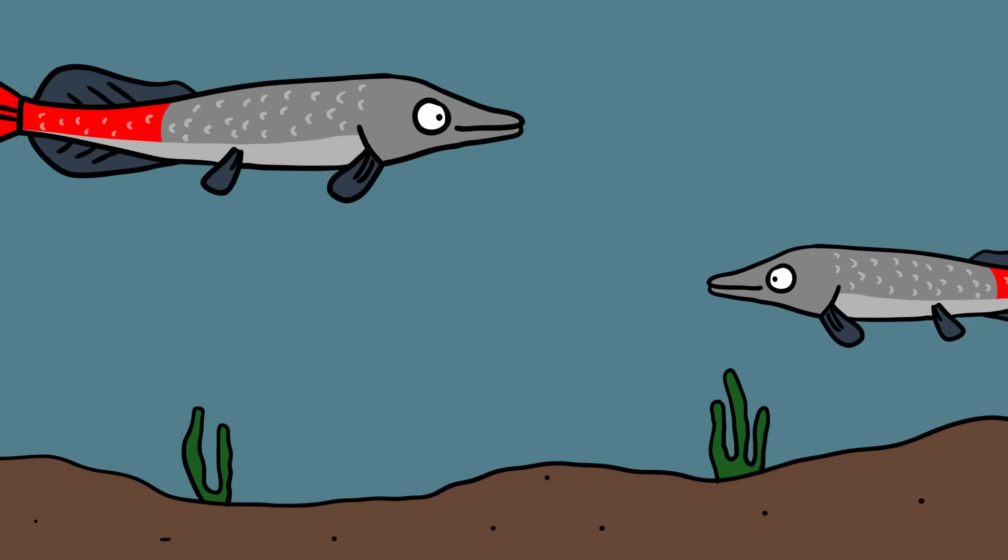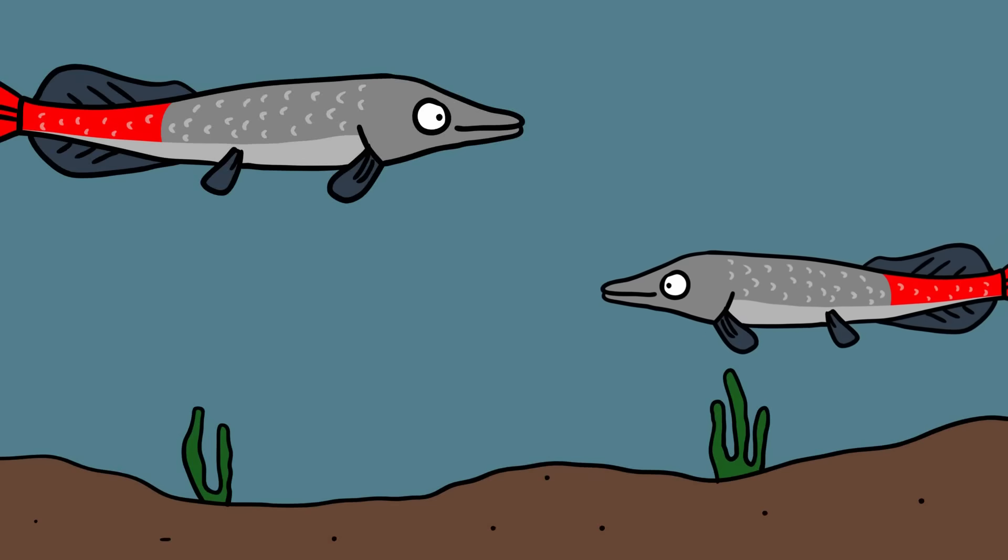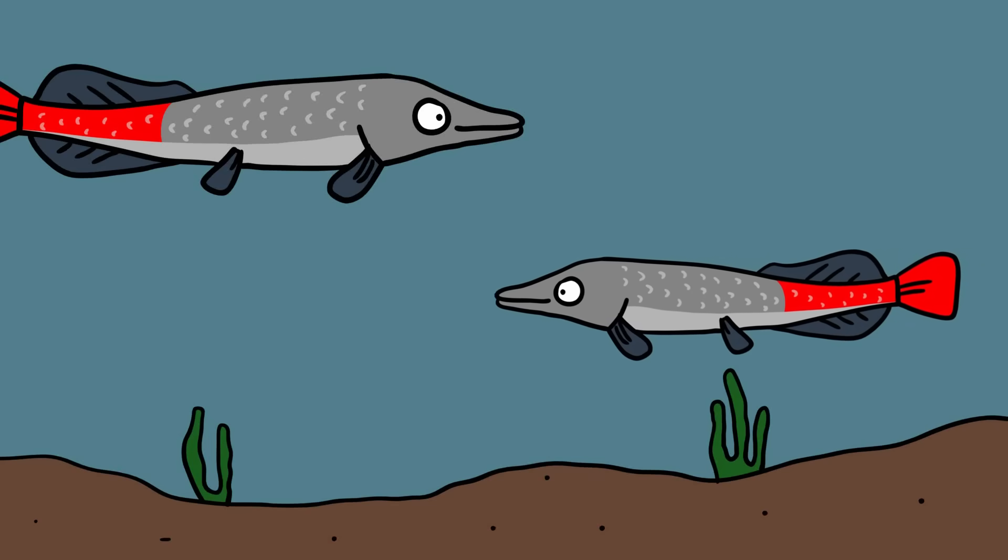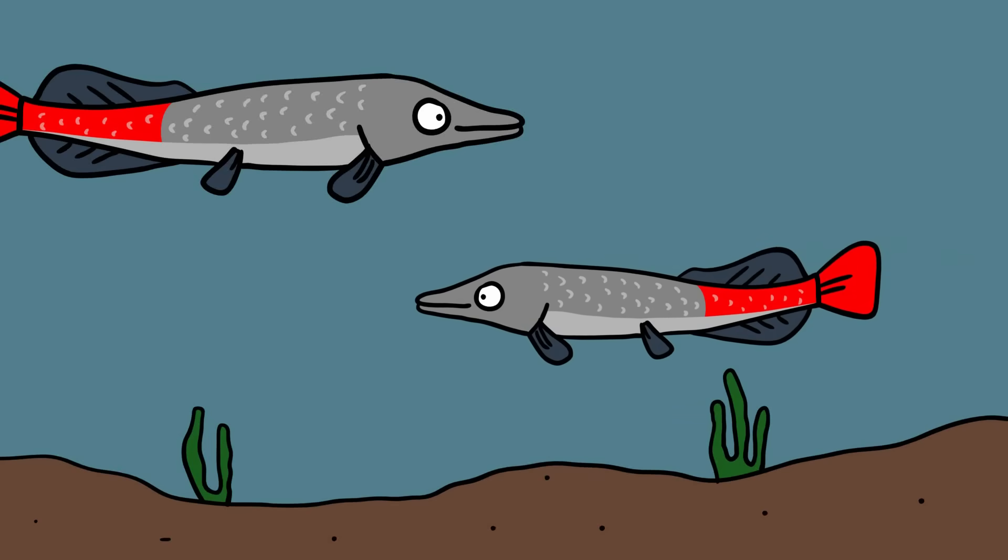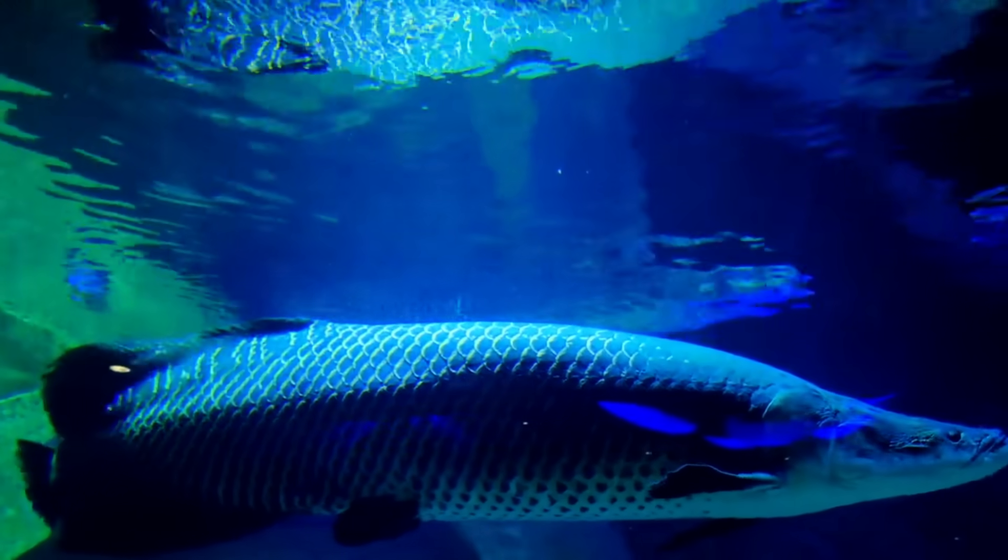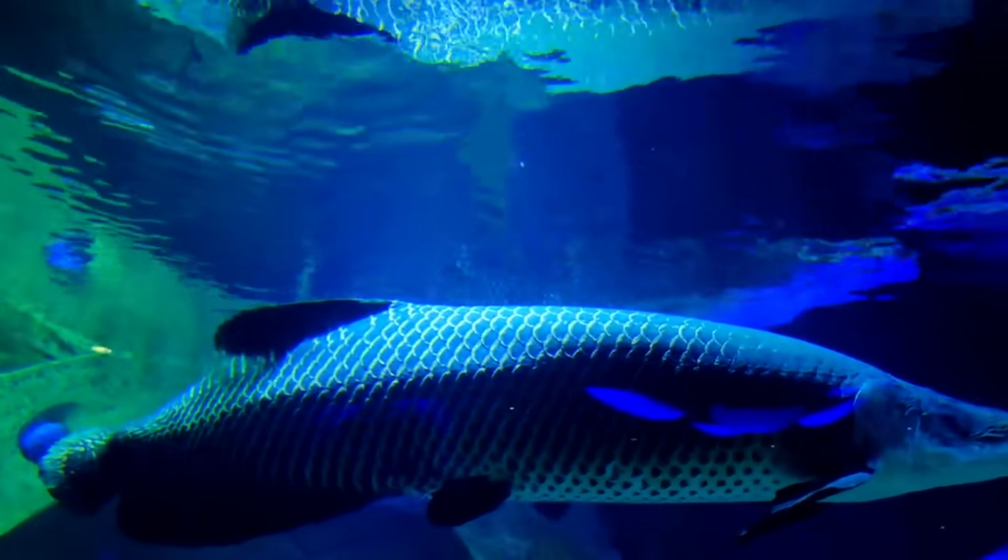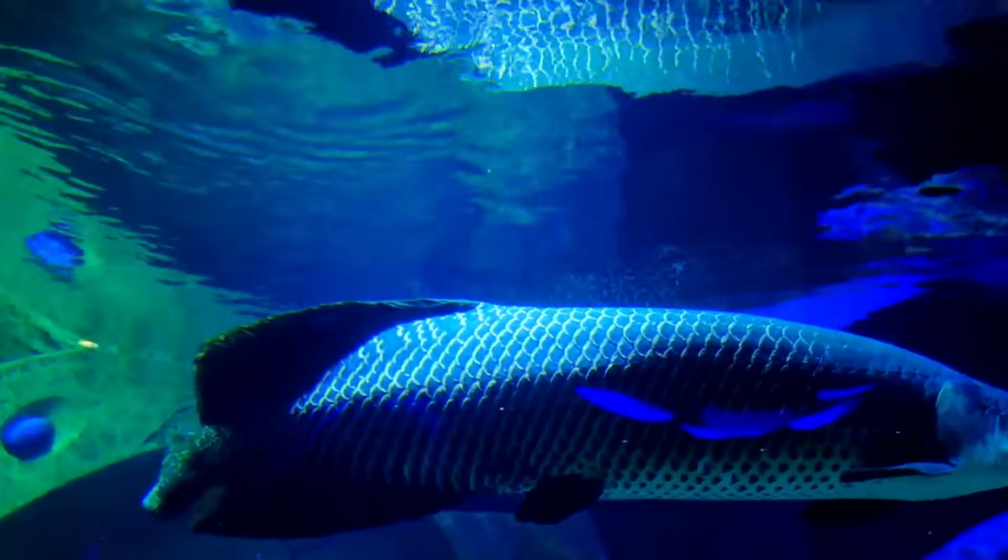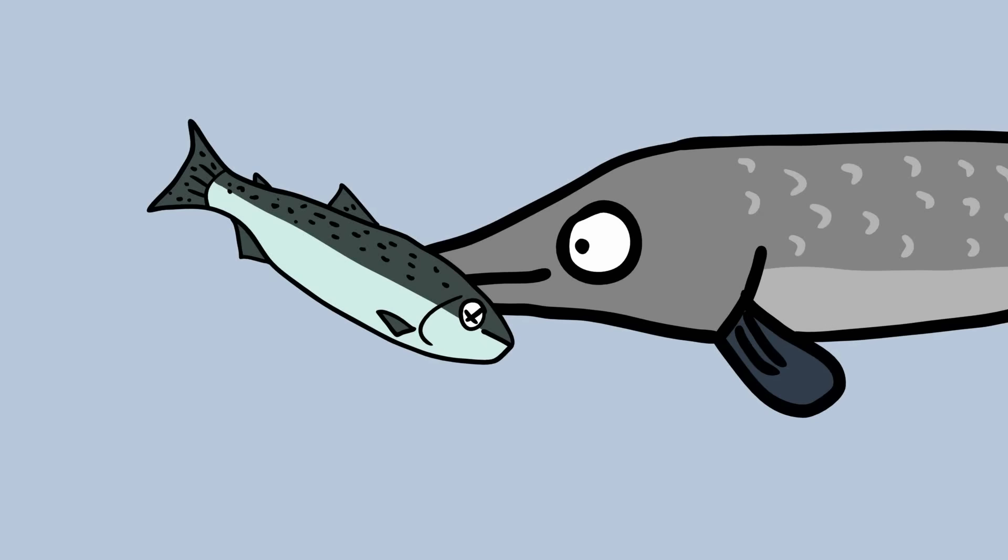Arapaima, also known as Pairaruku or Paiiche, are gigantic carnivorous fish that live in the Amazon and surrounding lakes. Encased in armored scales, they think nothing of living in piranha-infested waters, and they are pretty effective predators themselves, feeding on fish and the occasional bird.